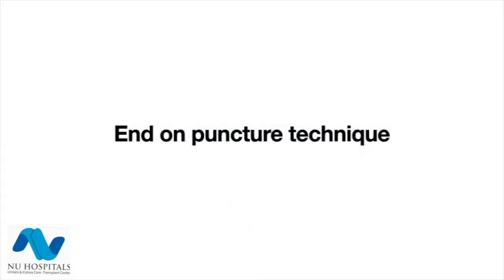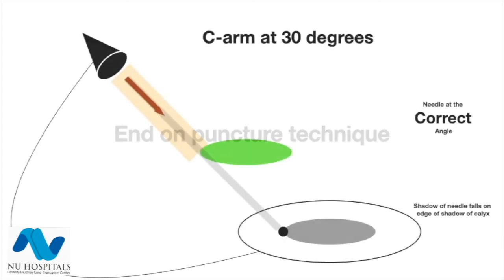Now let us talk about the end-on technique. Here we start by placing the needle on the skin pointing towards the edge of the calyx. The C-arm angle is then manipulated in both the craniocaudal and the mediolateral planes so that the shadow of the needle is seen as a round hub sitting on the edge of the calyx.